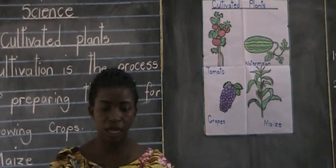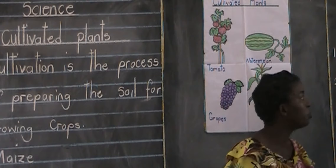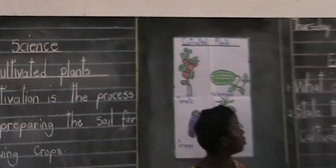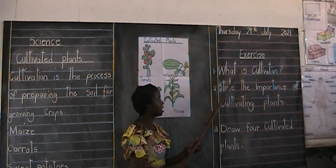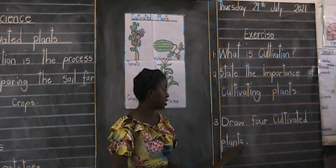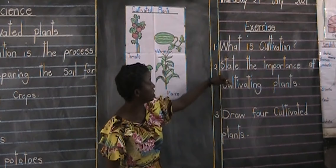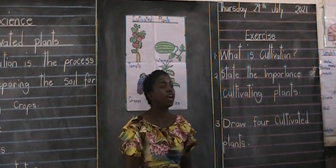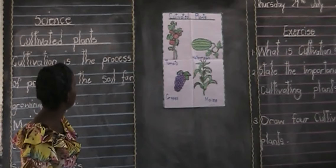So now since we have looked at everything, I want us to look at the exercise to see what you have understood. The first question reads: What is cultivation? Number two: State the importance of cultivating plants. Number three: Draw four cultivated plants. We have named different types of plants, so here you draw four, here you state the importance, and on the first one you define what cultivation is.